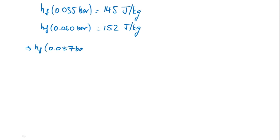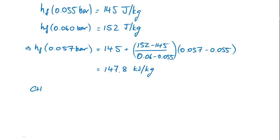If we substitute those values into our expression that we derived earlier, we can directly calculate the enthalpy of saturated water at 0.057 bar. It's 145 plus the slope of the line multiplied by that difference in x, which is 0.057 minus 0.055. When we calculate that, we get 147.8 joules per kilogram.